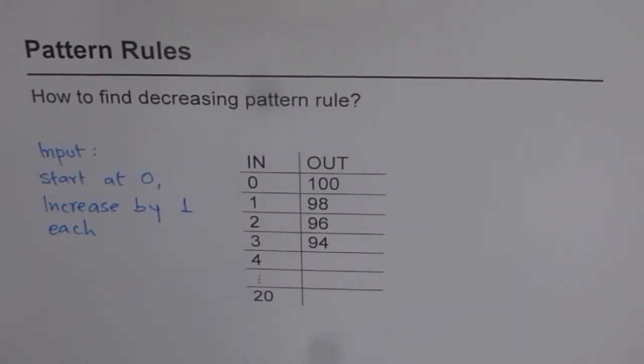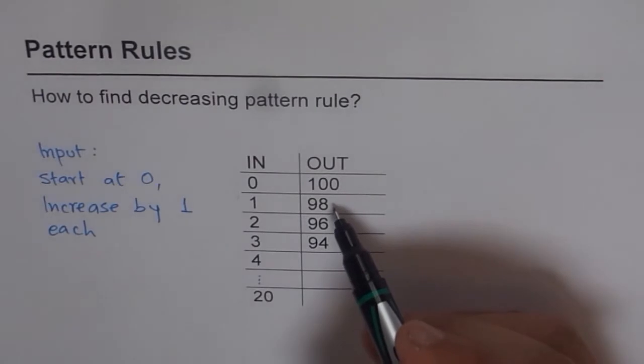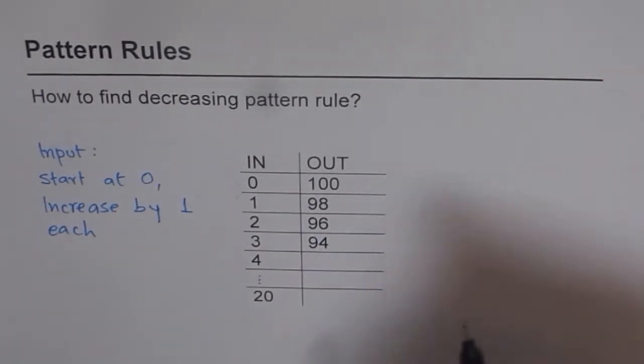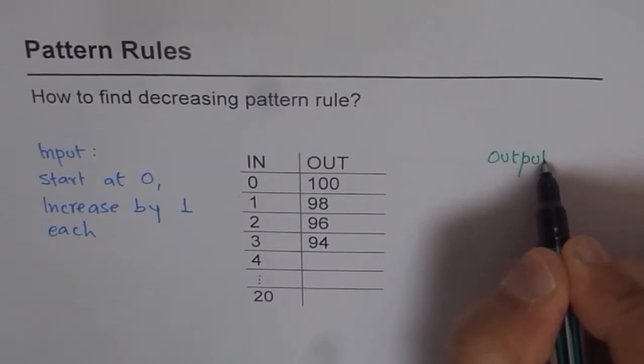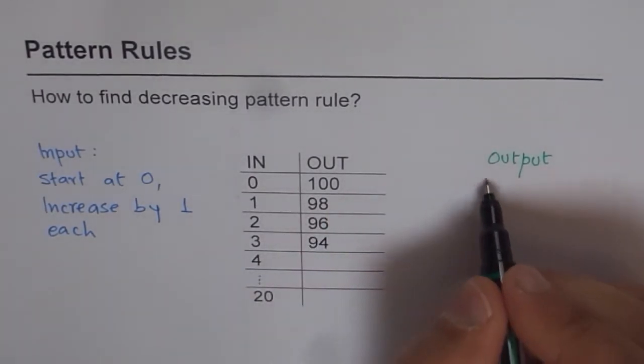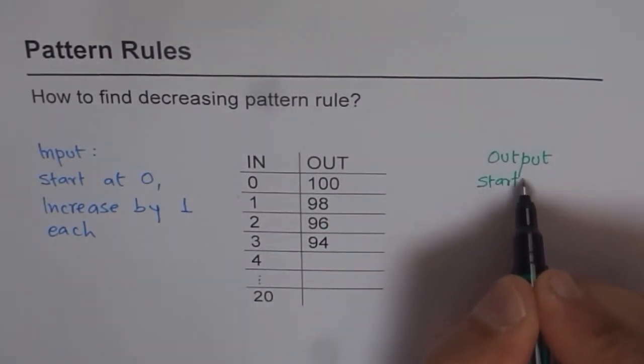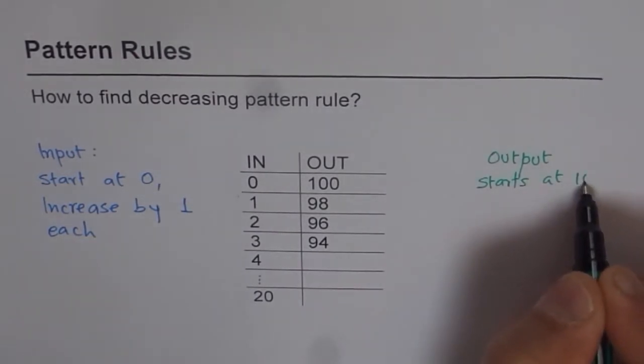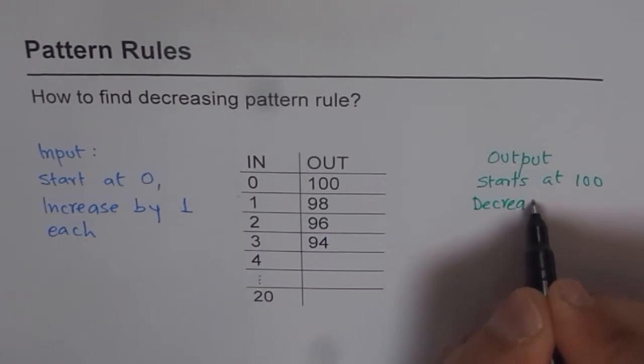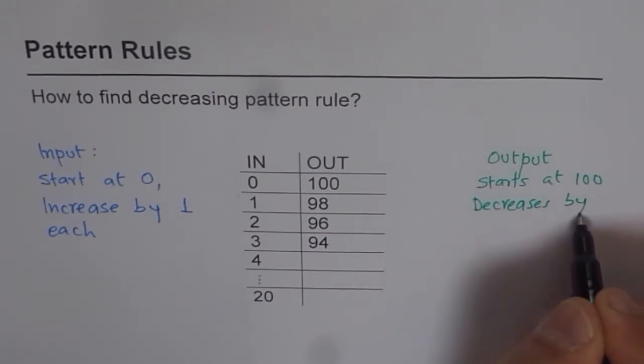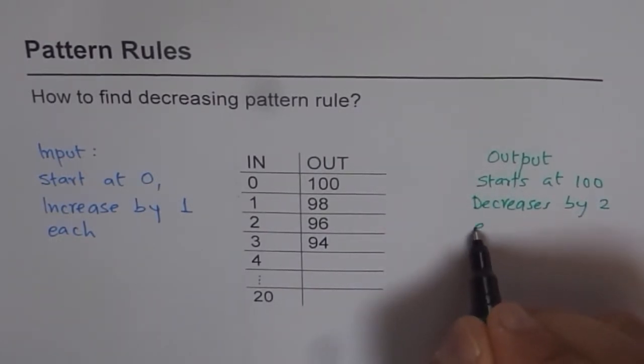How about the outputs? For the outputs we can say the numbers are 100, 98, 96, 94. So as far as output is concerned, it starts at 100 and then decreases by 2 each time.